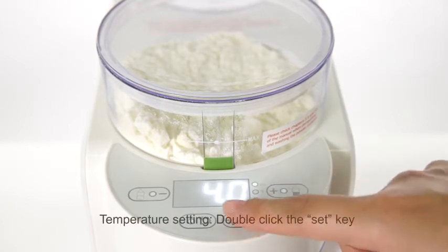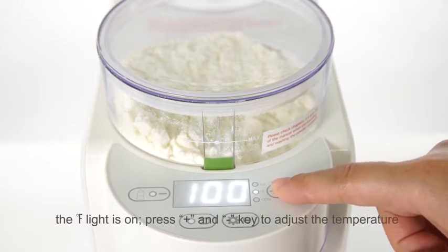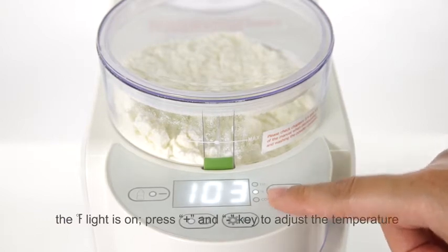Temperature setting: Double click the set key. The Fahrenheit light is on. Press plus and minus key to adjust the temperature.